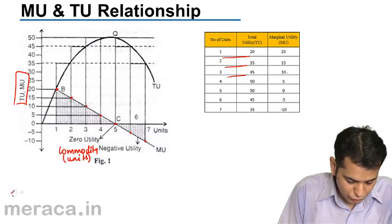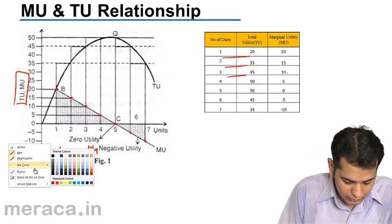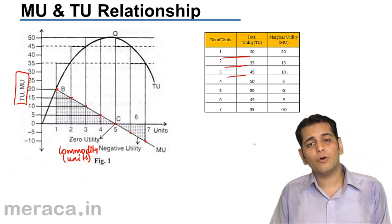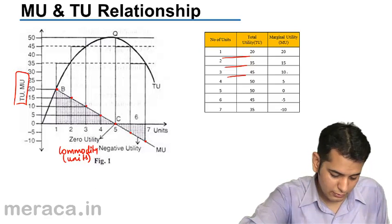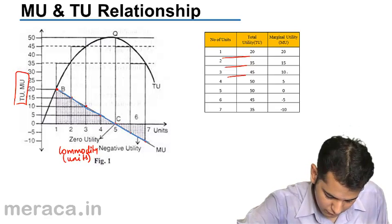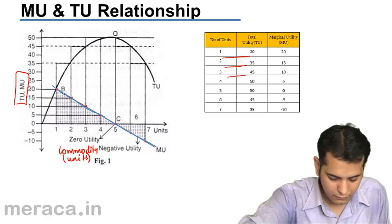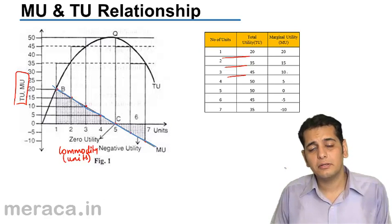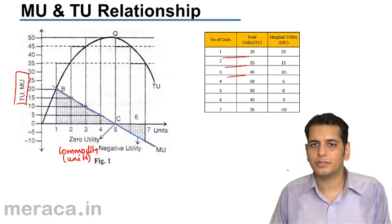So when we join all these points, we get a curve, and this curve is called the marginal utility curve.